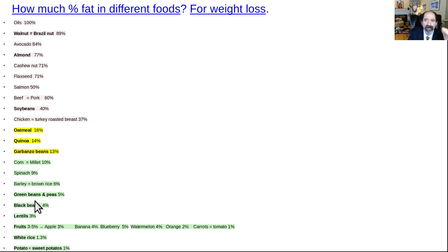So there's a bean low in fat. Most beans are 25% to 30% protein, a little higher than I would want. But at least these ones are low in fat. Green beans and peas and black beans are 4% in fat. Lentils are 3% in fat.